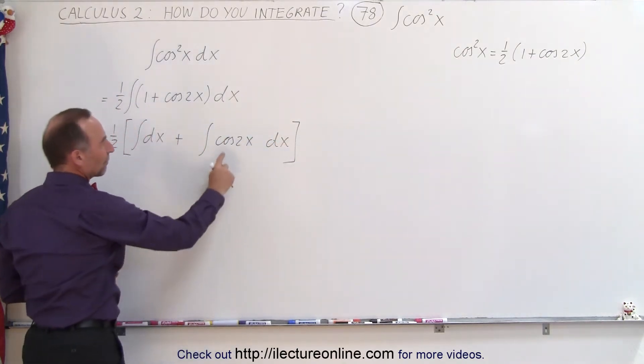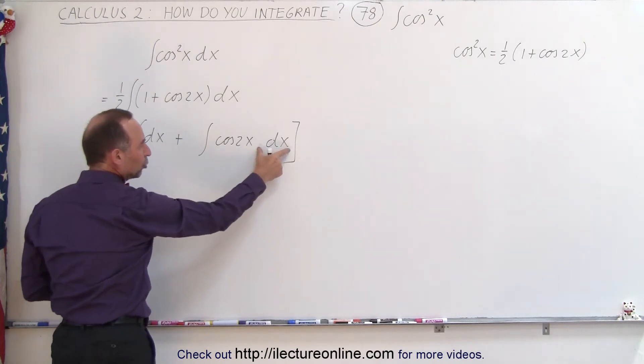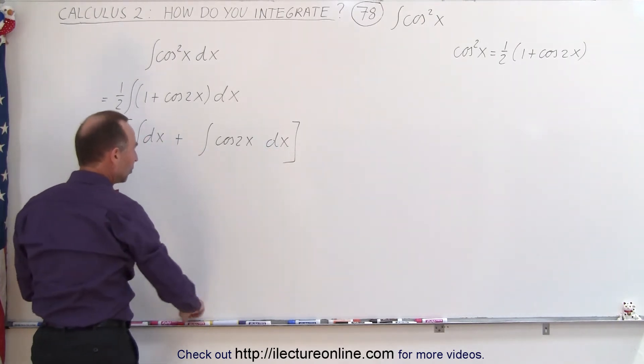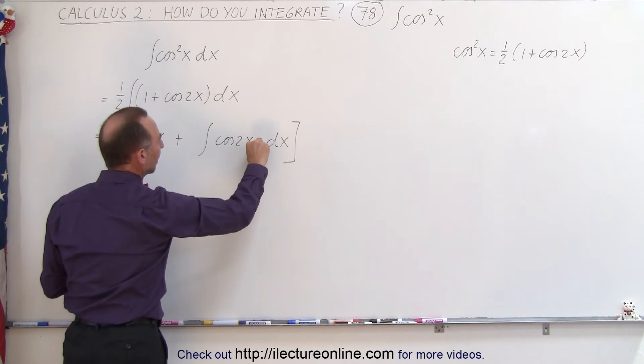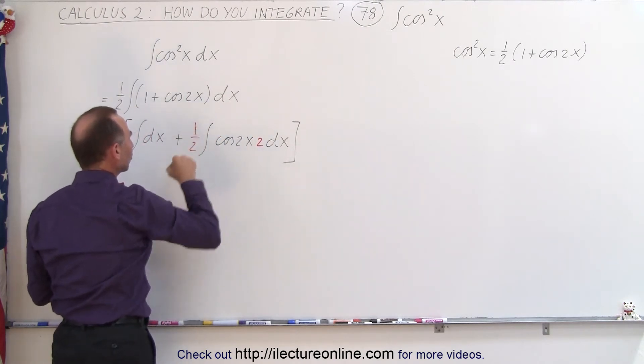Now of course here we have the cosine of 2x, so the proper differential would be a 2 dx, which means we need to multiply this times 2, and of course divide by 2 so we don't change anything.